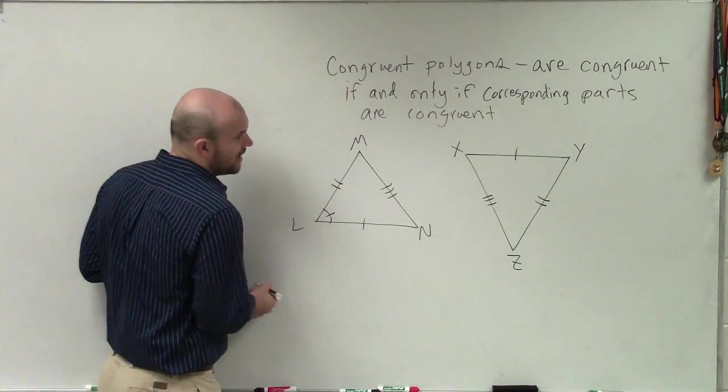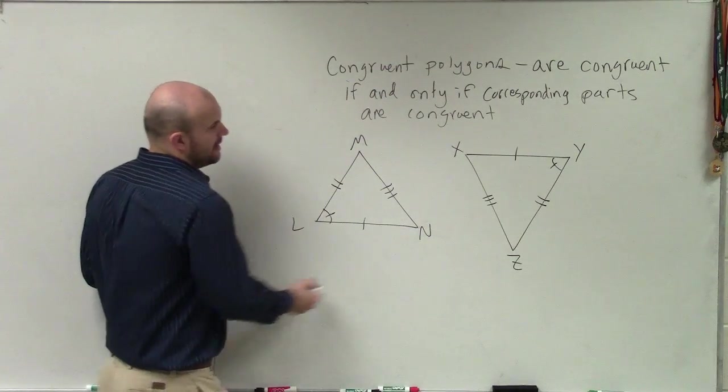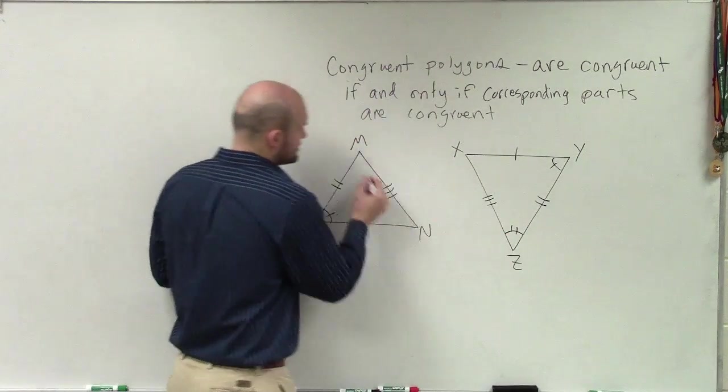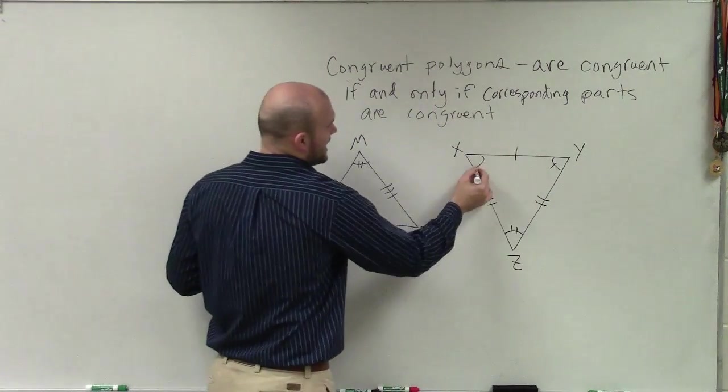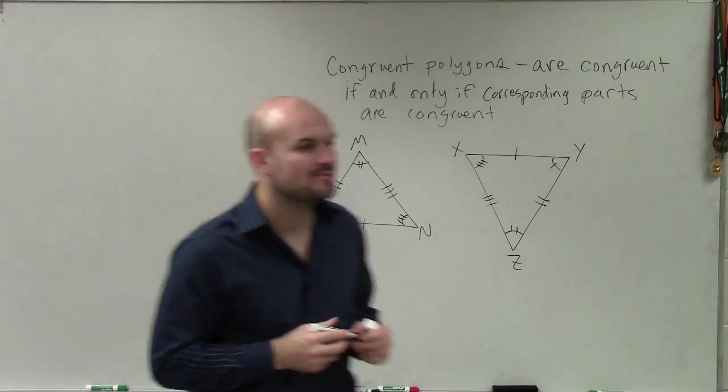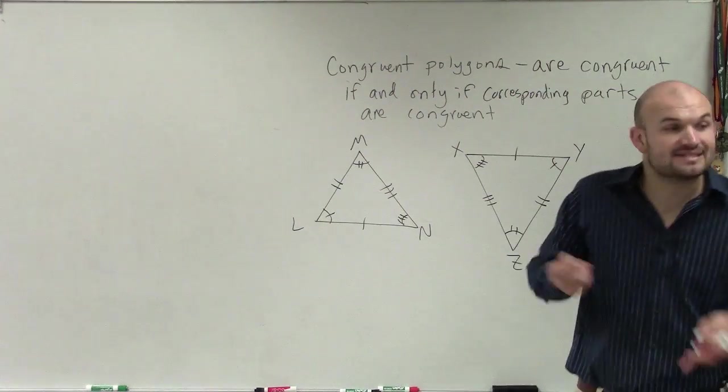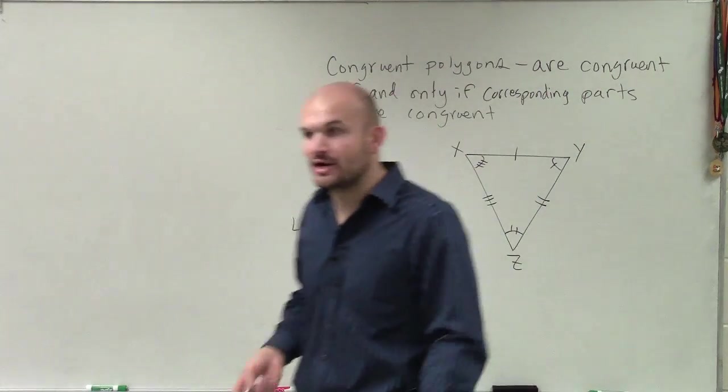So I'm going to say that L is congruent to Y. Similarly, M is congruent to Z, and X is congruent to N. So when we're talking about corresponding parts, the angles are equal to the angles, and the side lengths are equal to the side lengths.